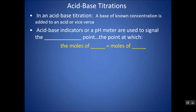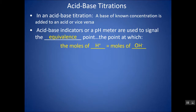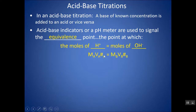A titration typically involves an acid of known concentration being added to a base of unknown concentration, or vice versa — it's a way of finding the molarity of the unknown. You use either an indicator or a pH meter to determine when you've reached the equivalence point, the point at which all H⁺ from the acid has reacted with all OH⁻ from the base. At the equivalence point: moles of H⁺ = molarity of acid × volume of acid × number of H⁺ donated.